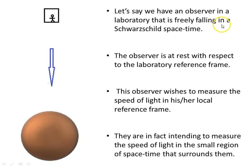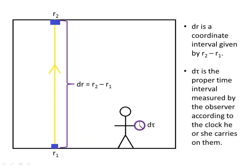So let's say we have an observer in a laboratory that is freely falling in a Schwarzschild spacetime. So here's our mass generating a Schwarzschild spacetime. Here's our observer in a laboratory, and this laboratory is free to fall. It's freely falling under the influence of the curvature caused by this mass here. So it's moving according to the curvature generated by this mass here. The observer is at rest with respect to the laboratory reference frame, and this observer wishes to measure the speed of light in his or her local reference frame. Now they are, in fact, intending to measure the speed of light in the small region of spacetime that surrounds them. What do they record? What is their value of c?